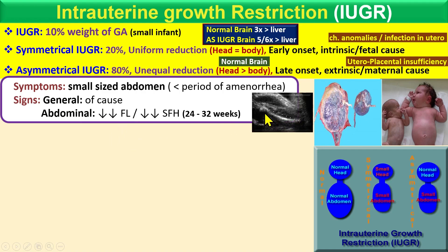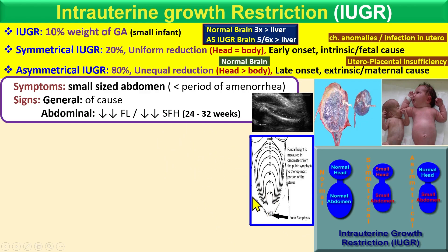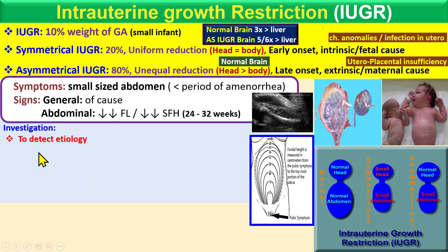On ultrasound examination, femur length will be very low. Femur length is actually the most accurate measurement for gestational age, so if it is very small, it indicates growth restriction. Another important finding is the symphysis-fundal height (SFH): as pregnancy continues, the fundal height increases week by week. If the fundal height is very low, it indicates growth restriction, as it correlates with fetal length.